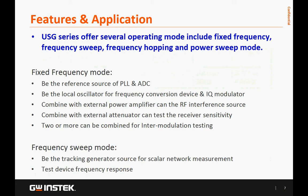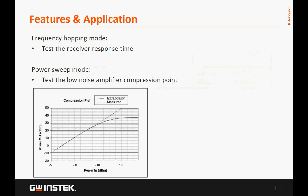The USG Series signal generator has a very wide application range. Educational institutions and electronic component manufacturers use it for the following applications. Under frequency hopping mode, USG can test the receiver response time. Under power sweep mode, USG can test the low noise amplifier compression point.